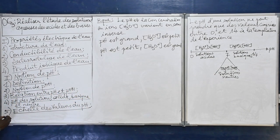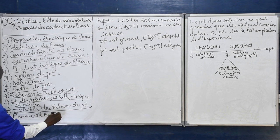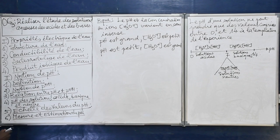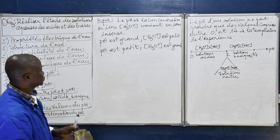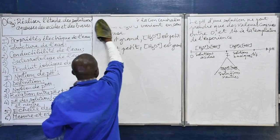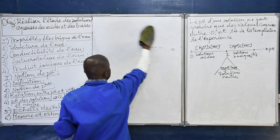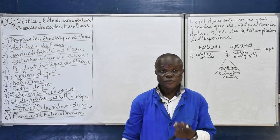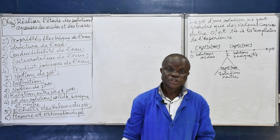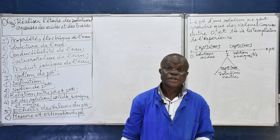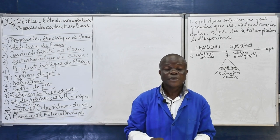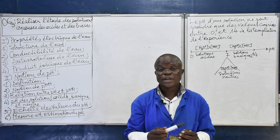P-6 : mesures et estimations du pH. Pour mesurer le pH de façon précise, on utilise un appareil appelé pH-mètre. On utilise aussi le papier pH ou les indicateurs colorés pour mesurer le pH de façon approximative. C'est le pH-mètre qui permet de mesurer avec exactitude le pH d'une solution.